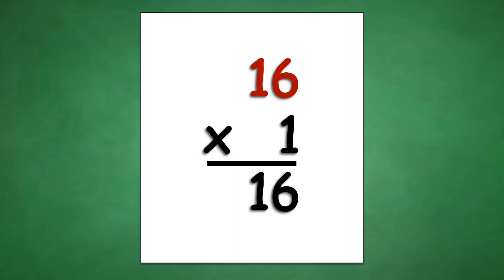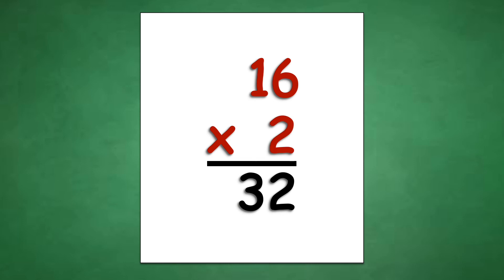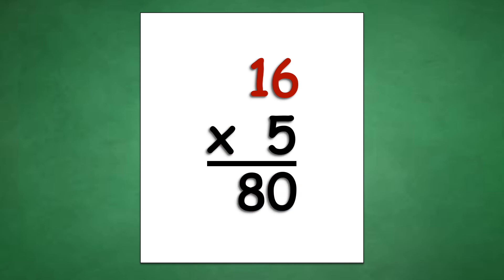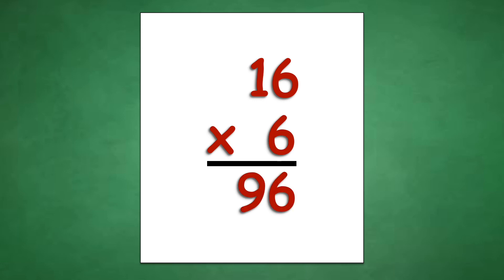Table of 16: 16 times 1 equals 16, 16 times 2 equals 32, 16 times 3 equals 48, 16 times 4 equals 64, 16 times 5 equals 80, 16 times 6 equals 96.